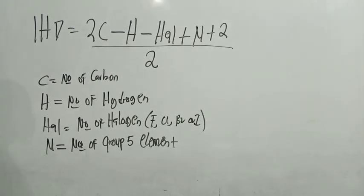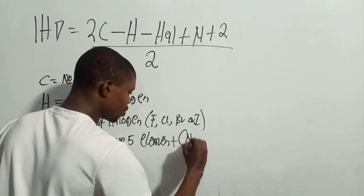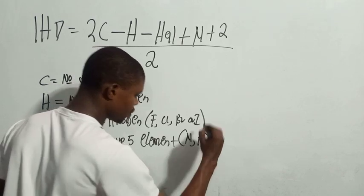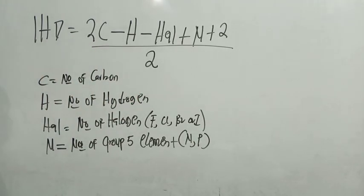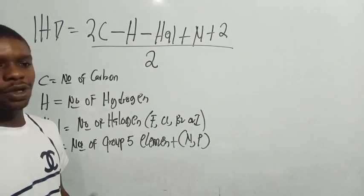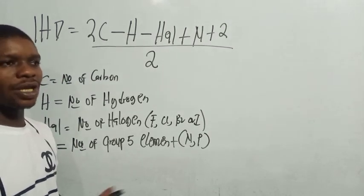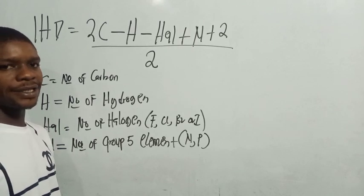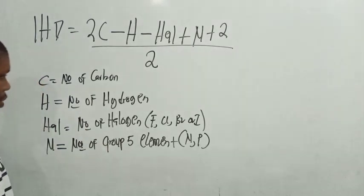The number of group five elements — the group five elements you commonly see are nitrogen and phosphorus.